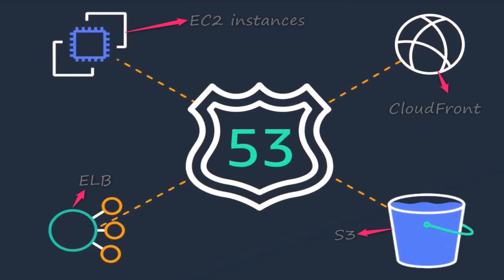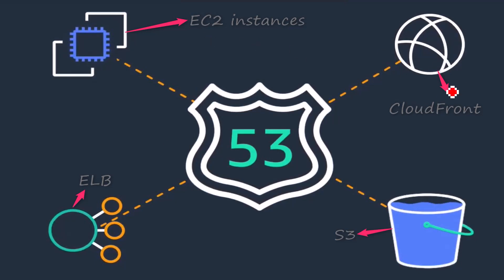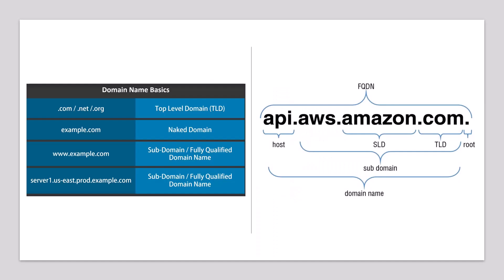Here is a diagrammatic view — Route 53 seamlessly connects to EC2 instances, CloudFront, ELB, and S3. I've covered CloudFront in other videos, so you can go through those to know more. Here you can see that Route 53 provides seamless connectivity with ELB as well as S3.